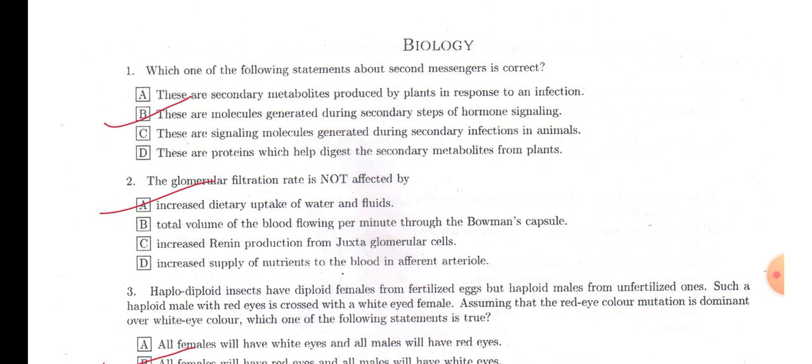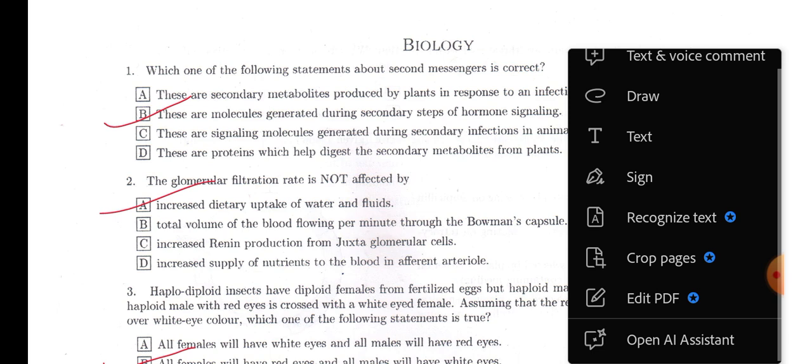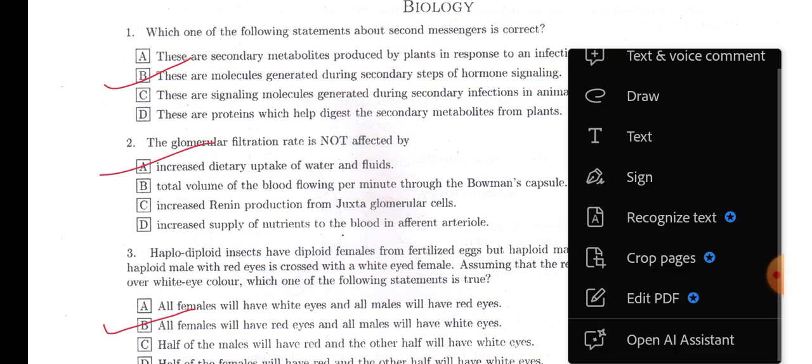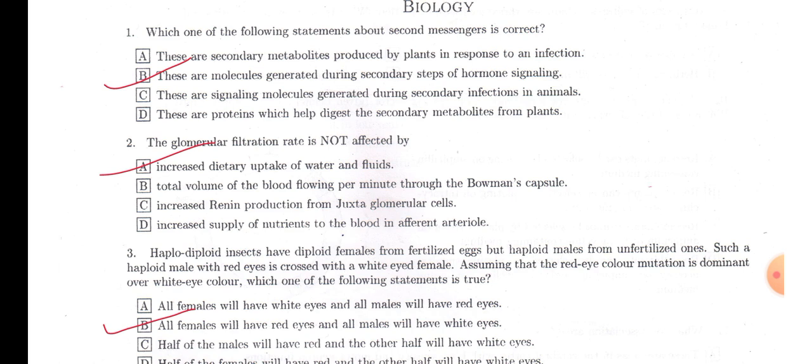In question number one, which of the following statements about second messenger is correct? So we know the first messengers are always hormones and that hormone binds with a specific receptor. If it is a protein hormone, then in the cytoplasmic site a second messenger is generated.